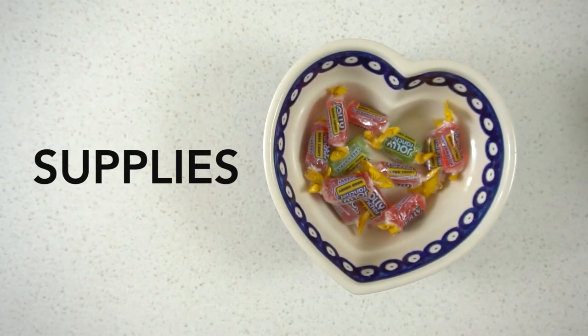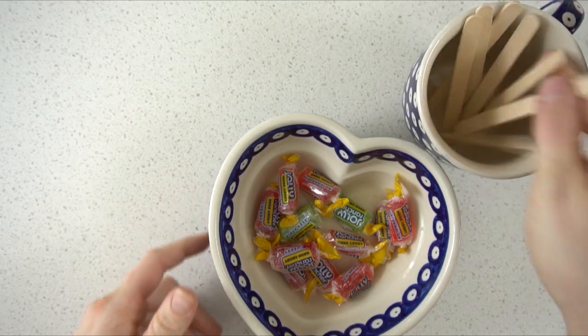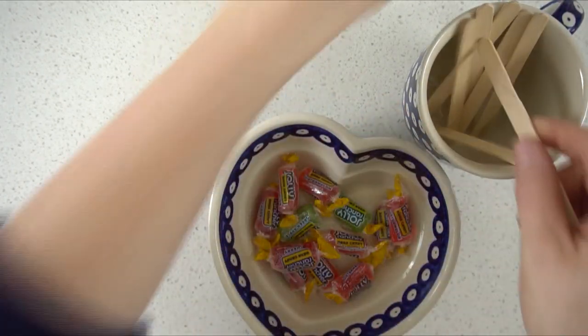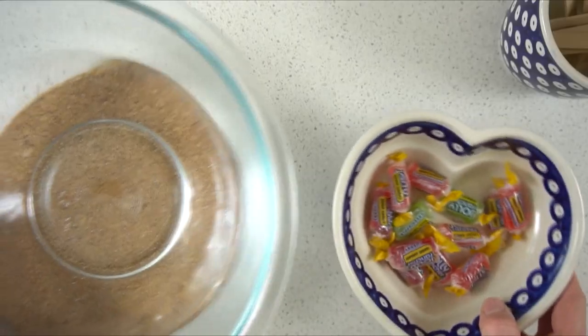These are the supplies that you need for this project. You need some Jolly Ranchers. You can use popsicle sticks if you want to stick the flower onto something. It could also just be by itself like this one. And you need some hot water.